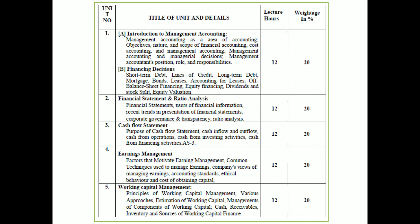Unit 4 is Earning Management. Topics include the Company's Views of Managing Earnings, Accounting Standards, Ethical Behavior and Cost of Obtaining Capital, and the Factors that Motivate Earning Management. All these things we learn in Earning Management.